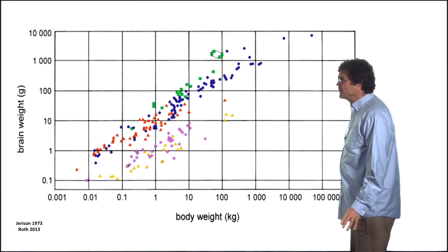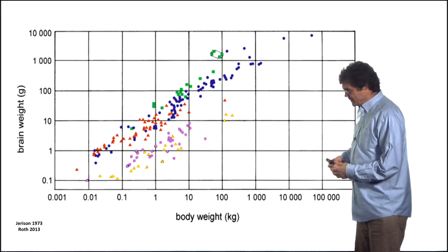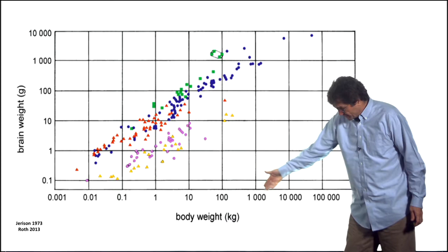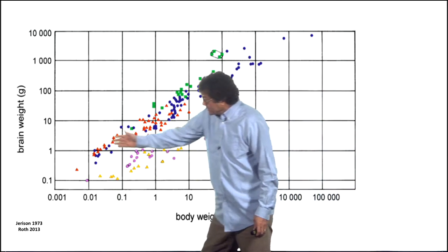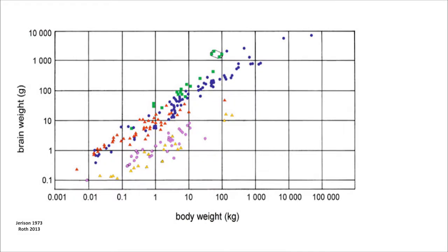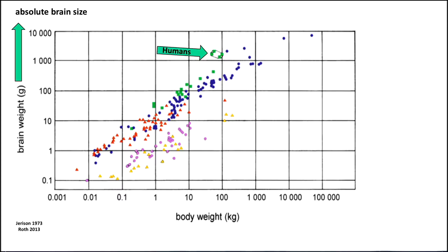Now, here's a plot of a bunch of different vertebrates, and on the x-axis is body weight, notice the logarithmic scale in kilograms. The y-axis is grams in brain weight. And the absolute brain size is the y-axis, and humans are right here. So if you're interested in absolute brain size, then there are four blue dots up here that are bigger. They happen to be whales and elephants. So if absolute brain size was proportional to something called intelligence, then whales and elephants would be smarter than humans. But that's not the only way to measure brain size.